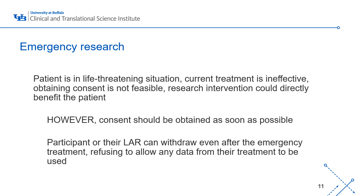Emergency research is a special type of research that includes the potential for a waiver of consent, but it is a much larger topic and very rare at the university. An example is when a patient is in a life-threatening situation, current treatment is ineffective, obtaining consent is not feasible, and the research intervention could directly benefit the patient. However, consent should still be obtained as soon as possible, and the participant or their legally authorized representative can withdraw even after emergency treatment, refusing to allow their data to be used for research.